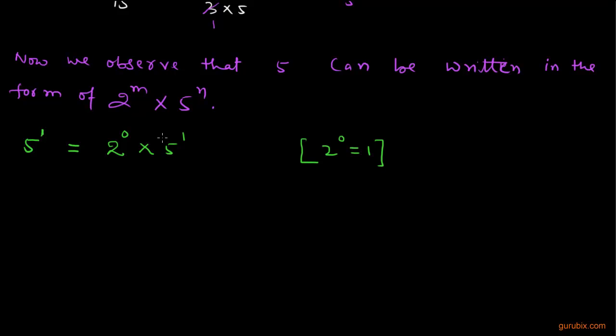So 5 is in the form of 2 raised to m multiplied by 5 raised to n. Therefore, 6 over 15 has a terminating decimal expansion.